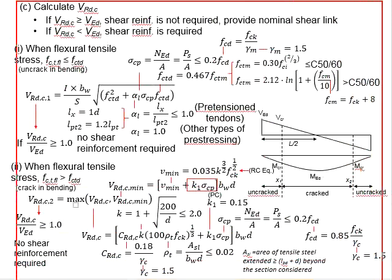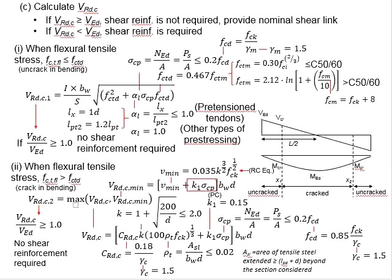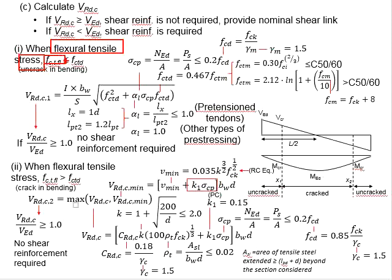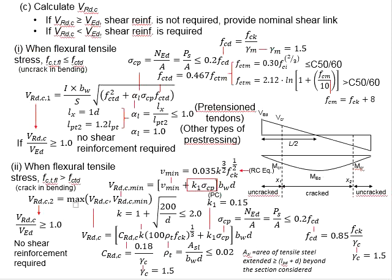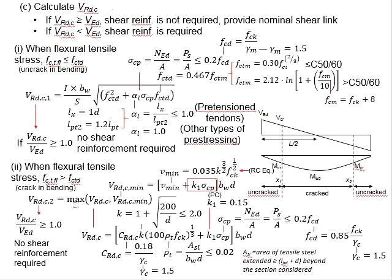This slide shows the equations used to determine the VRdc of the concrete. There are two conditions, represented by the relationship between the flexural tensile stress fctfl and the design tensile stress of the concrete, fctd. The conditions are: when the flexural tensile stress is less than the design tensile stress of the concrete, and when the flexural tensile stress is more than the design tensile stress of the concrete. This represents the response of the beam under load — specifically, the uncracked regions and cracked regions under bending.